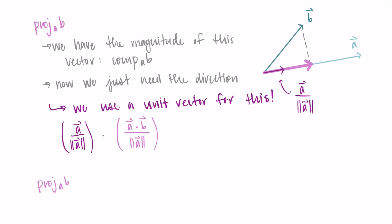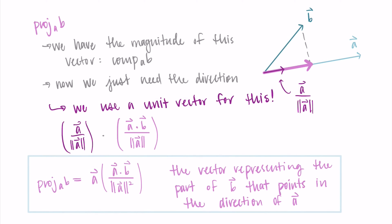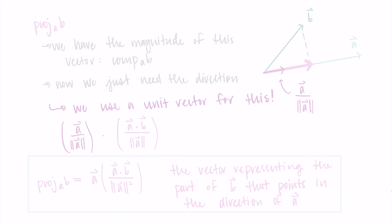Putting it all together, the vector projection of b onto a equals the vector a times the quantity (a·b) divided by |a|², combining the two magnitude-of-a terms. The vector a on the left is the only vector quantity; everything else is scalar. The projection of b onto a is the vector representing the part of b that points in the direction of a.